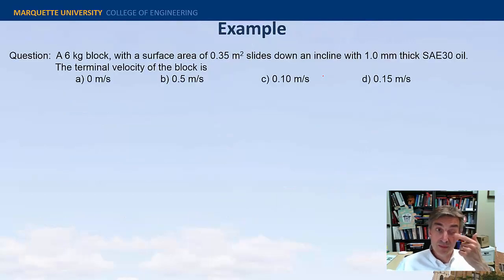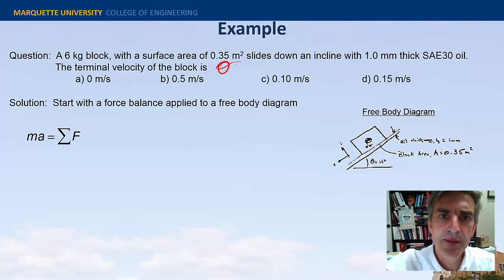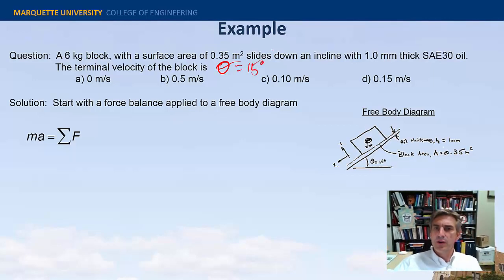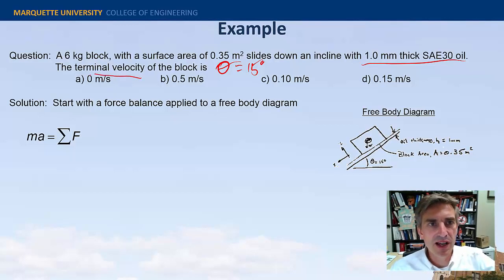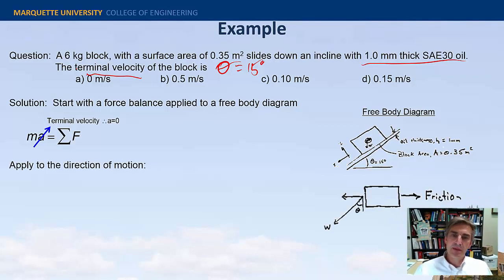Here's one: a block is sliding down a surface. Let me draw the free body diagram. Here's the block and it's sliding down this surface. The surface is inclined at 15 degrees. There's a thin layer of oil there, SAE-30 oil, one millimeter thick. What's the terminal velocity of the block? Well, the way forward is some basic dynamics: ma equals the sum of the forces. Because they're asking for the terminal velocity, that would mean that the acceleration is zero.